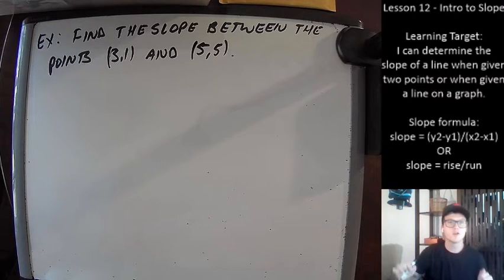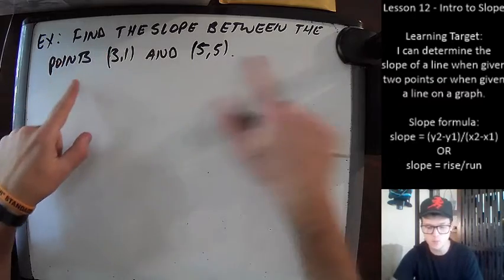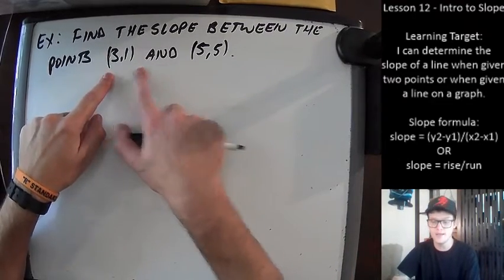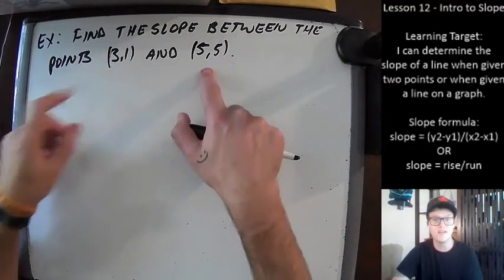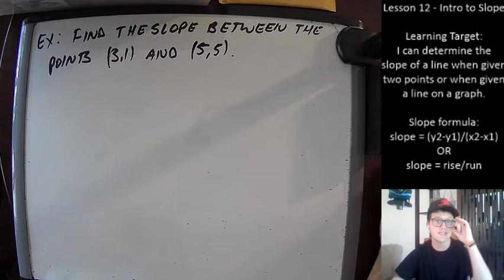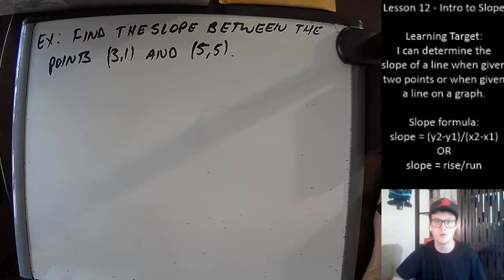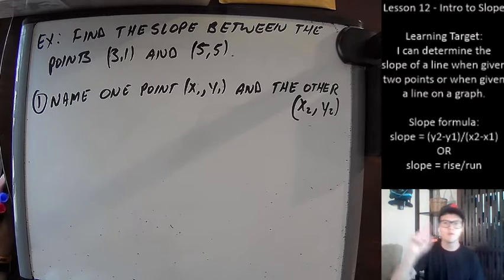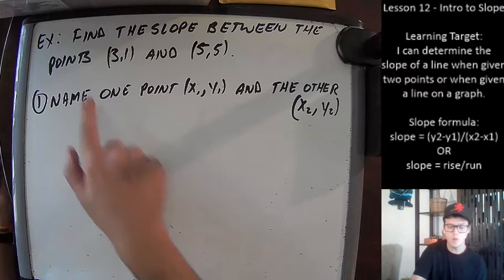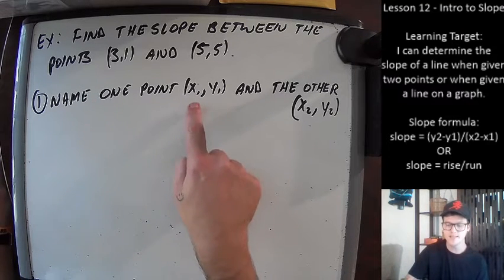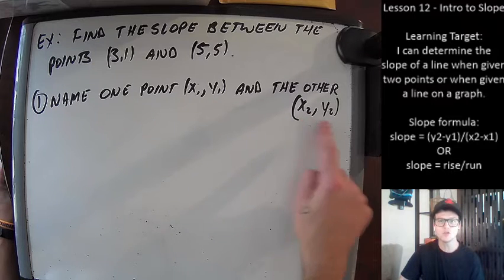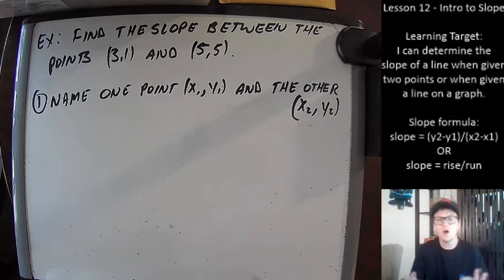Here's our first example: find the slope between the points (3, 1) and (5, 5). I'm going to give you four quick steps on how to find the slope of the line that goes through both points. The first thing we're going to do is name one of our points x₁, y₁ and the other one x₂, y₂.